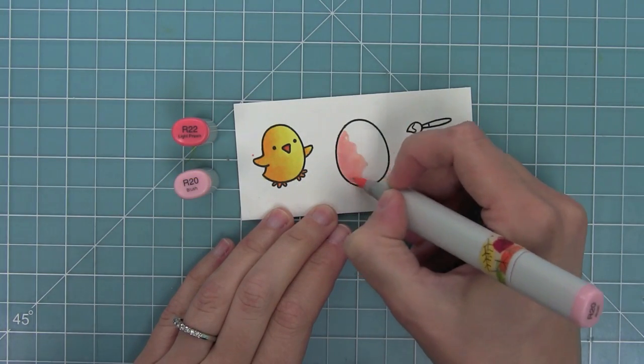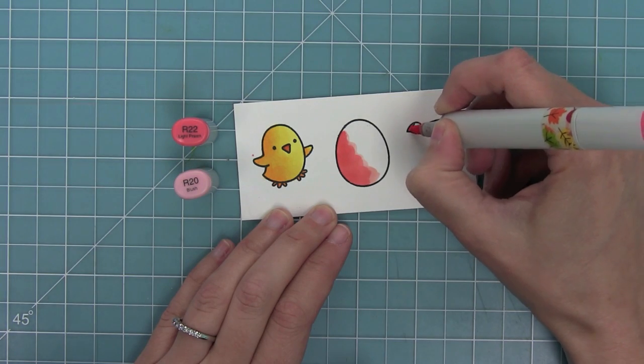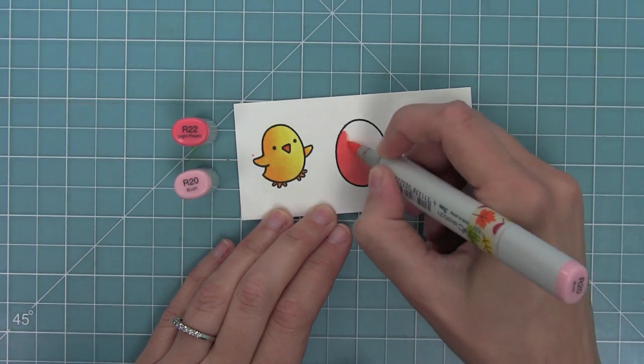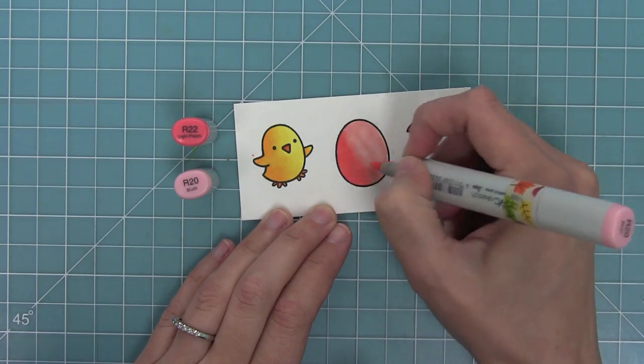I'm laying down my light color first to kind of wet the paper, and then my darker color over. I feel like this helps it blend a little bit better into my lighter marker as I blend into the white part of the egg there, keeping the top part the lightest.